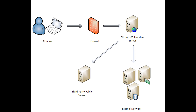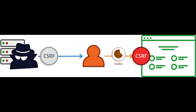If an attacker can modify the target URL, they can potentially pull sensitive information from the application or inject untrusted input to it. Cross-site request forgery involves taking advantage of state-changing requests.